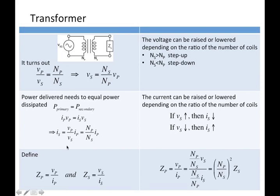By using our previously developed relationships, we can find a relationship between the impedance of the primary and the impedance of the secondary — it turns out it's related to the ratio of the coils squared. These are the basic facts about a transformer: the voltages of the primary and secondary are related, the currents are related, and the impedances are related as some function of the ratio of the turns.